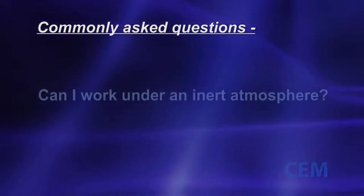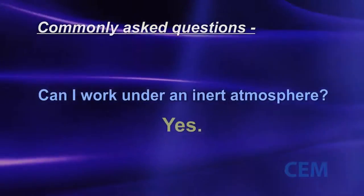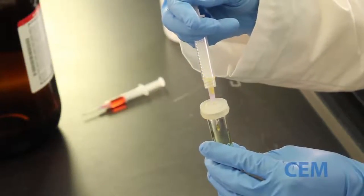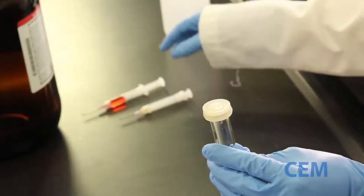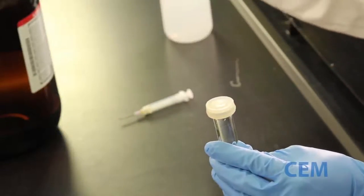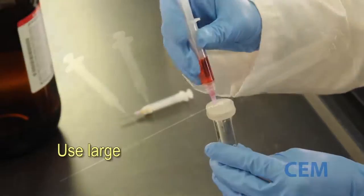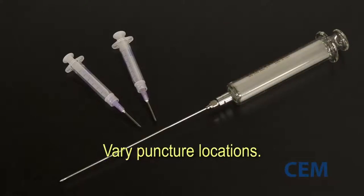Another common question is, can I work under an inert atmosphere? The answer to this question is also yes. The caps used on CEM Discover reaction vials reseal following puncture, as seen here. So inert reactions can be performed with ease. Treat the cap like a traditional septum. Use a larger gauge, smaller bore needle when piercing the cap, and do not repeatedly puncture in the same location, as this could prevent reseal.